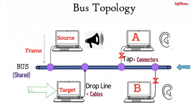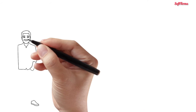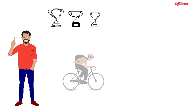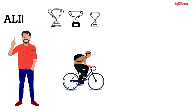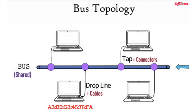Other computers reject the frame by checking the destination MAC address in the received frame. Suppose you are distributing prizes — as per the result of the competition, you asked Ali to come on stage for his reward, so only Ali will go and collect the prize. Same is the case in bus topology: only that computer accepts the frame to whom it is addressed.